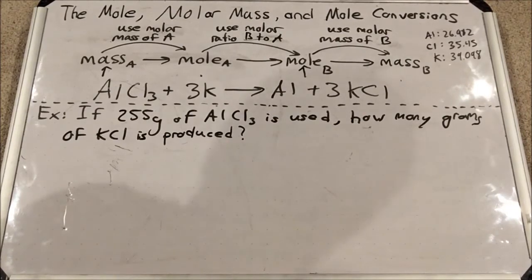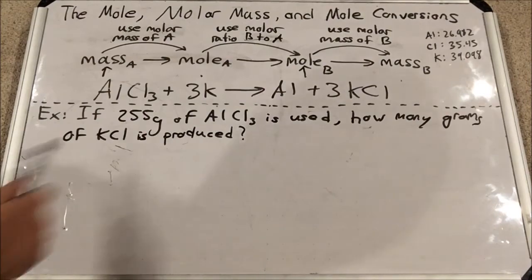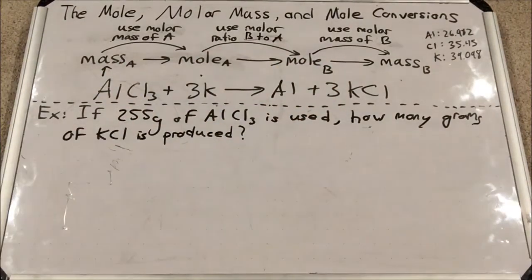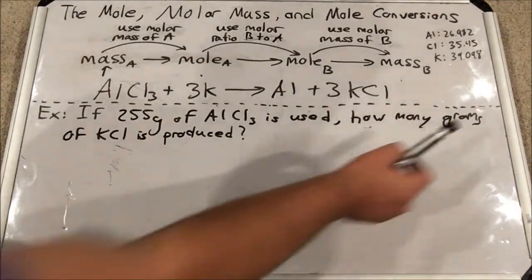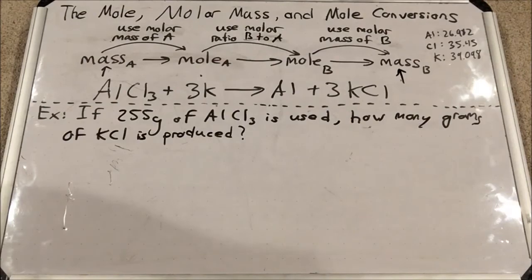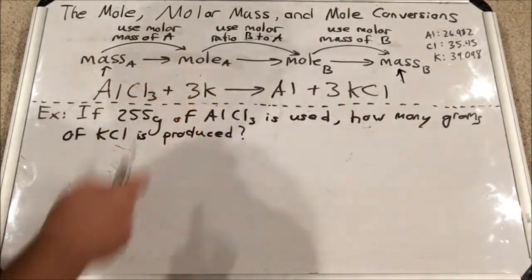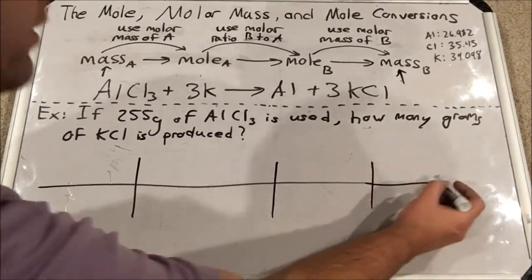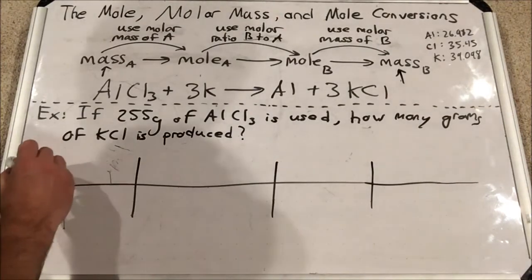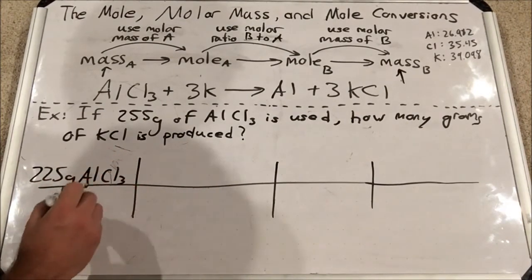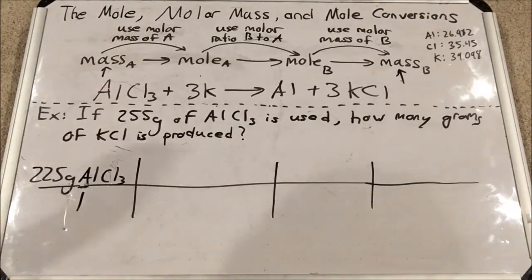My last example is a mass-to-mass conversion: if 255 grams of aluminum chloride is used, how many grams of KCl are produced? We start at mass and end at mass of another substance — so that's three steps, meaning three fractions in our factor label. Given in the top left: 255 grams of aluminum chloride over 1. Then I convert to moles AlCl3 using molar mass: one Al is 26.982 plus three Cl is 3 times 35.45, giving 133.332 grams per mole.